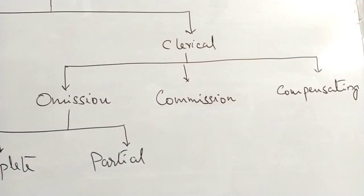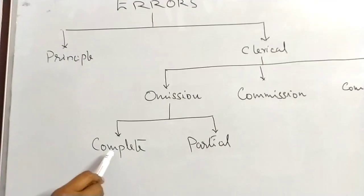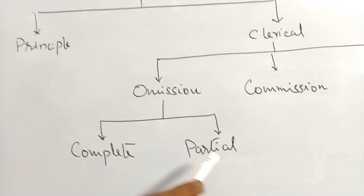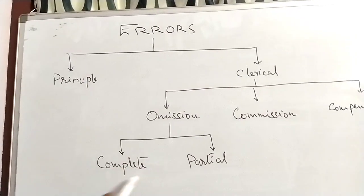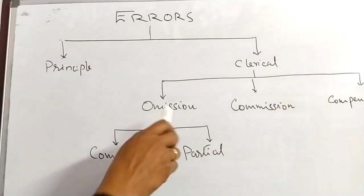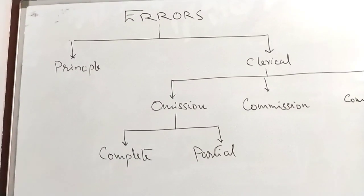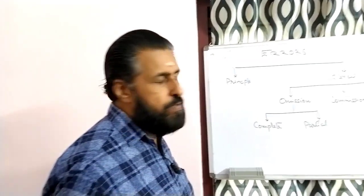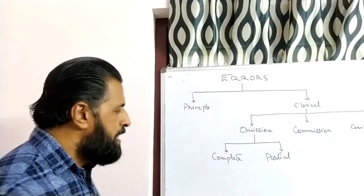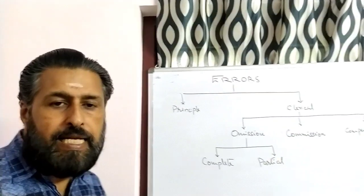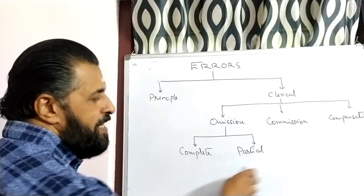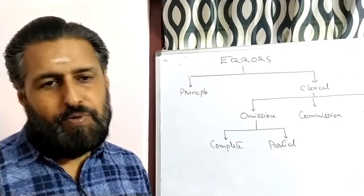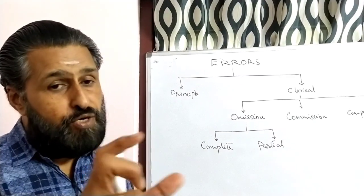Errors of omission are of two types: complete omission and partial omission. In complete omission, both the debit aspect and the credit aspect of a transaction are omitted entirely from the books. In partial omission, only one aspect is recorded and the other is missing.